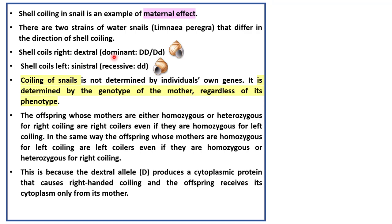That means the genotype for dextral should be capital D capital D, or capital D small d. Shell coiling to the left is called sinistral, and it is a recessive trait — that means the genotype should be small d small d.